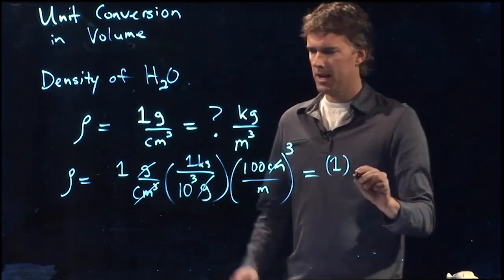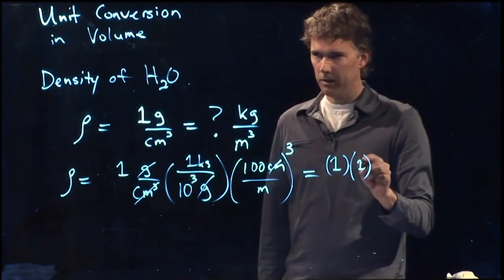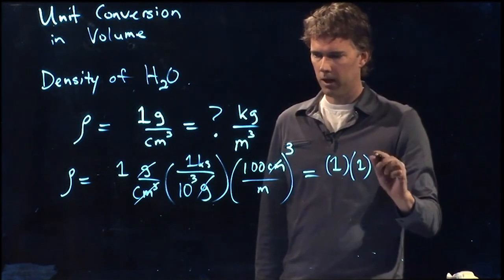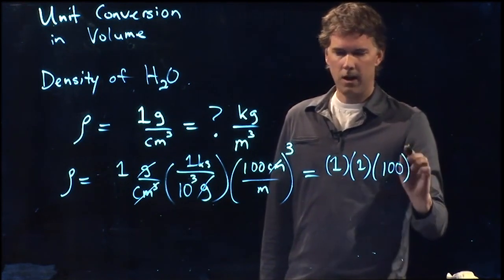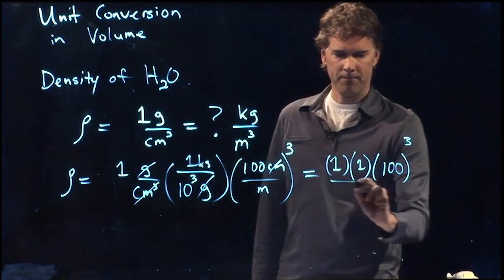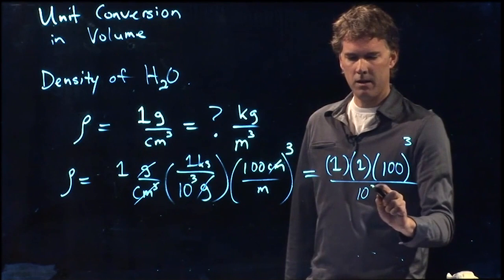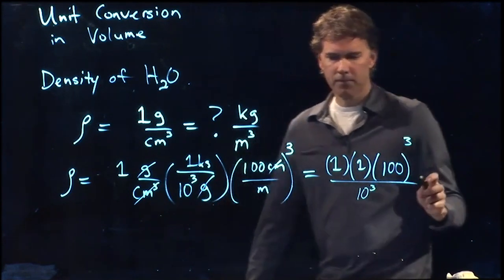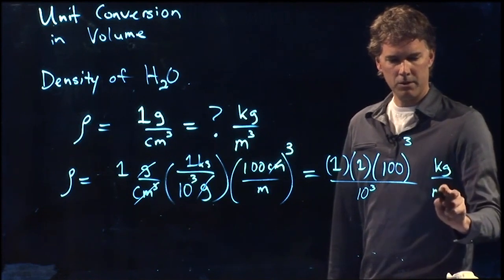1 times 1. 1 times 1 is 1 in the limit of small ones. And now we're going to take 100 and we're going to cube it. And we are dividing by 10 to the 3. And our units are kilogram per cubic meter.